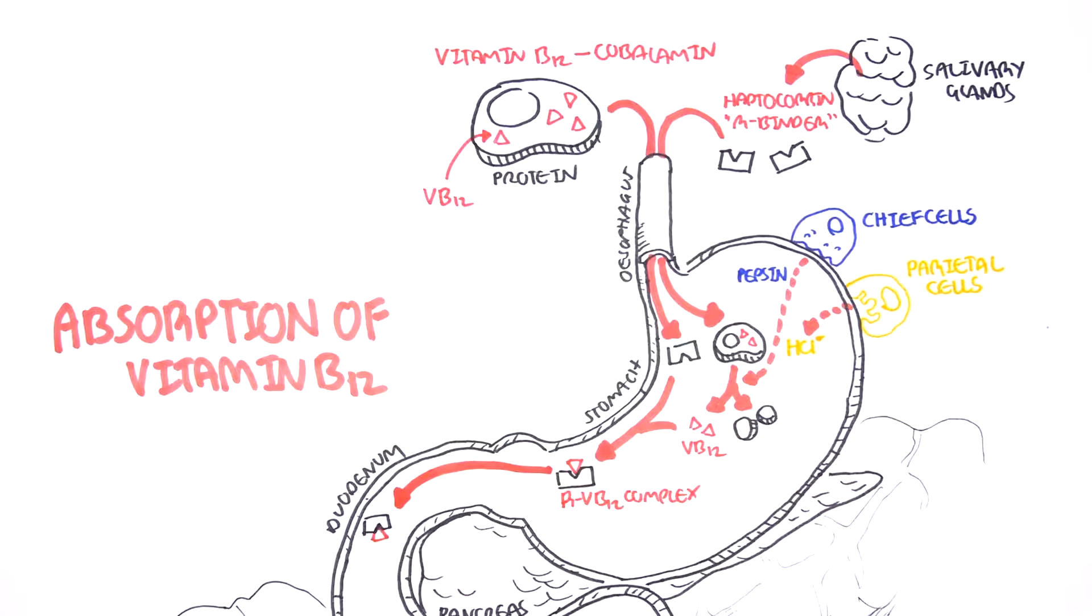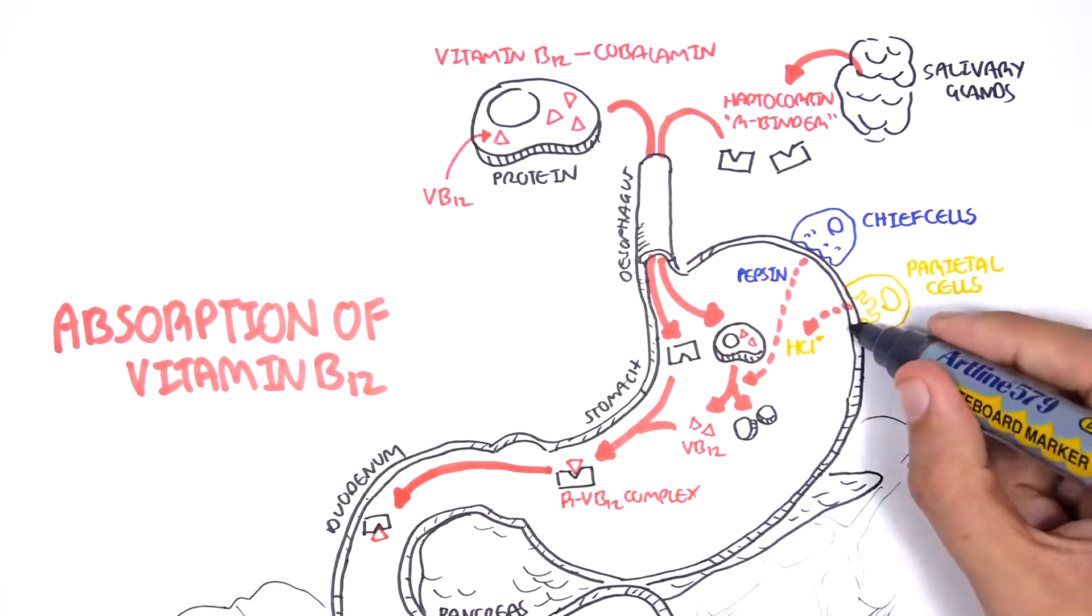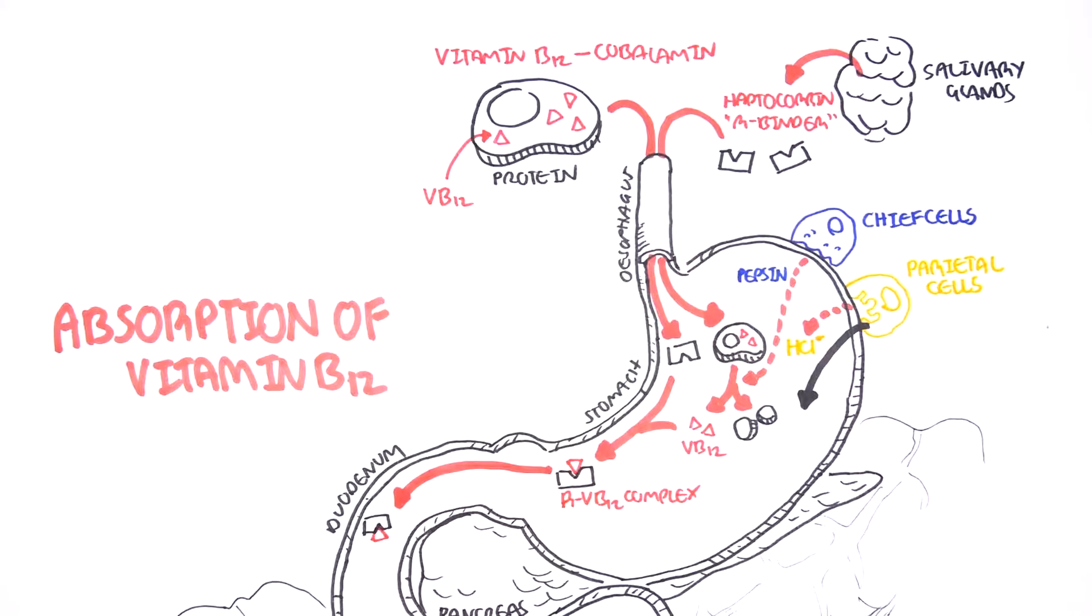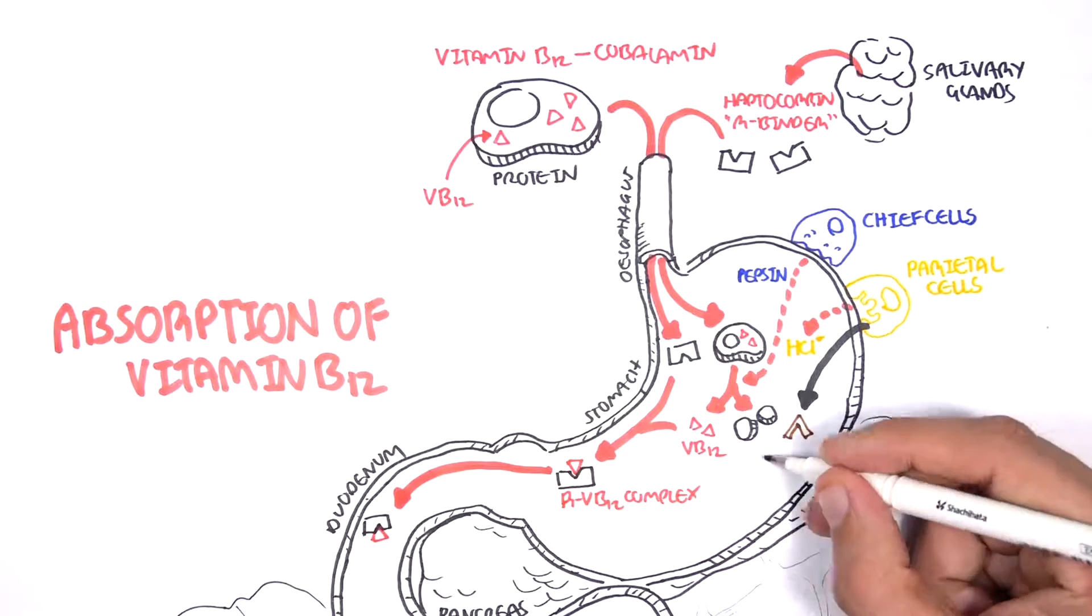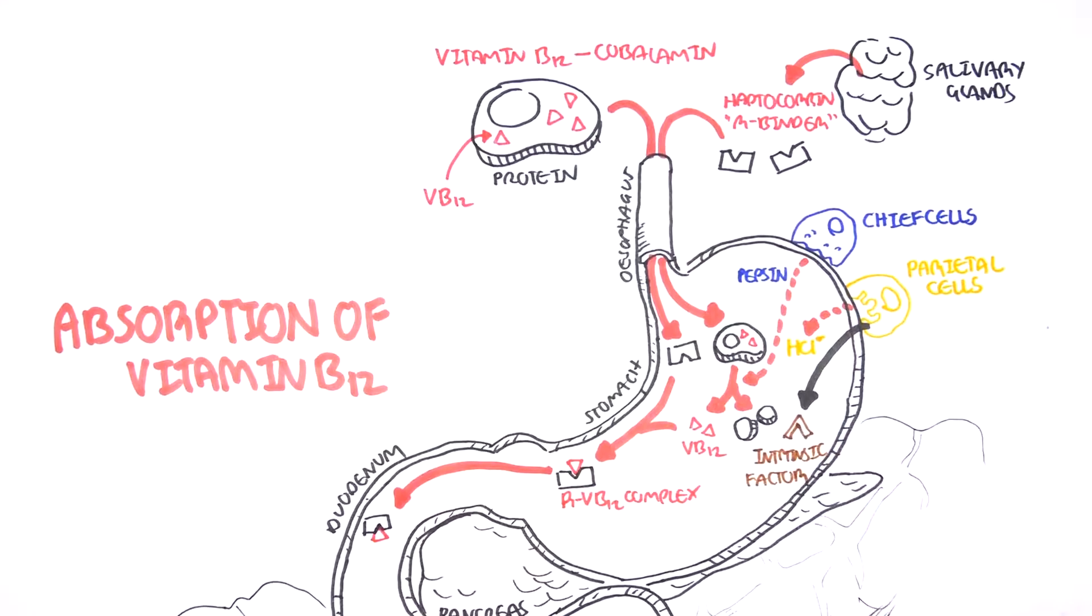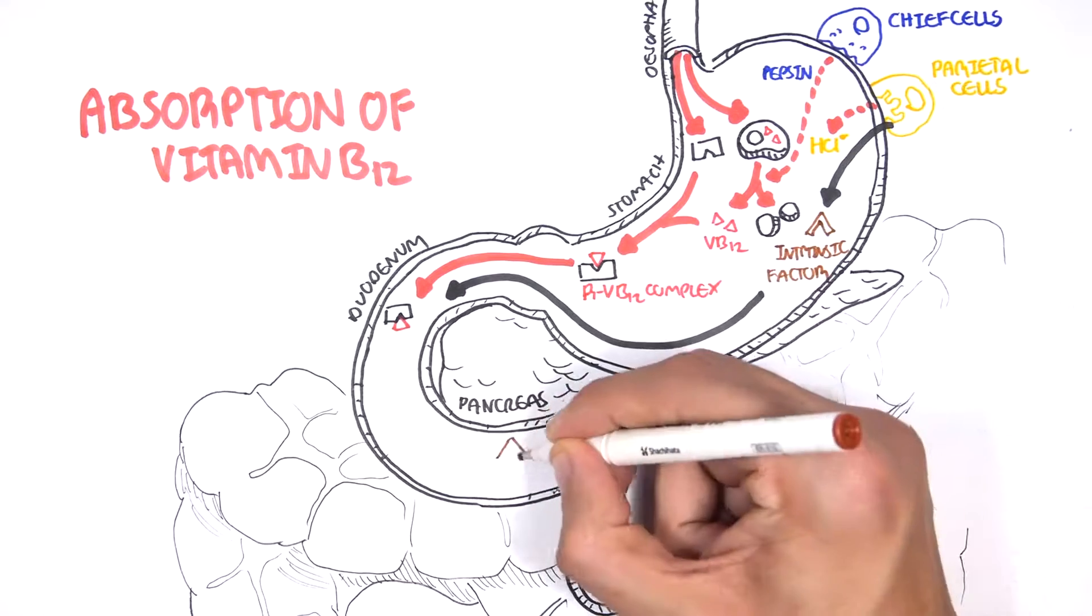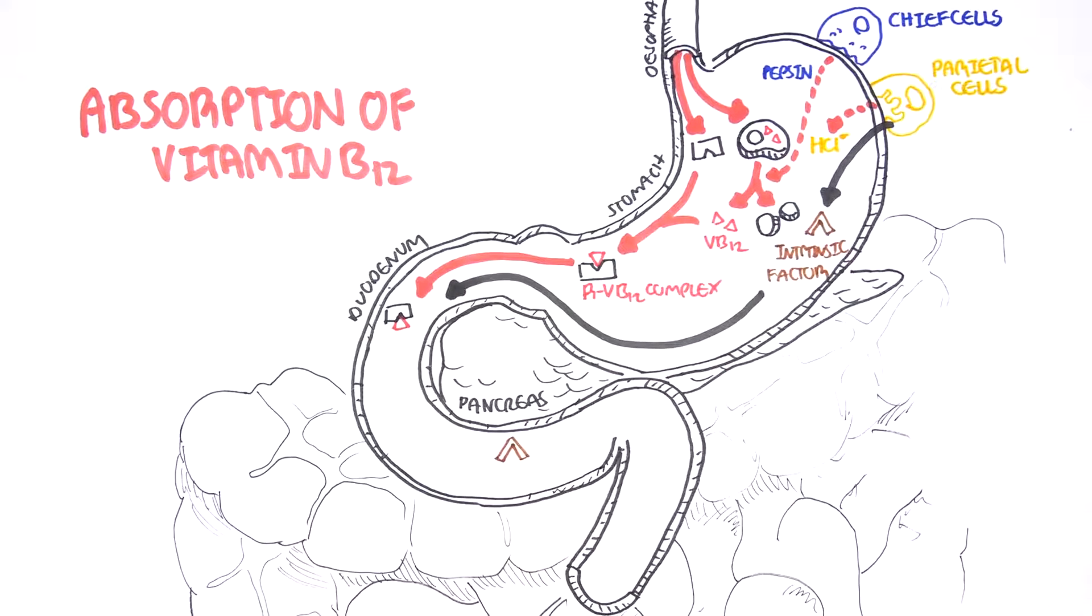Aside from producing hydrochloric acid, the parietal cells also secrete an important substance for vitamin B12 absorption. This molecule is intrinsic factor. The intrinsic factor released in the stomach will travel to the small intestine as well.